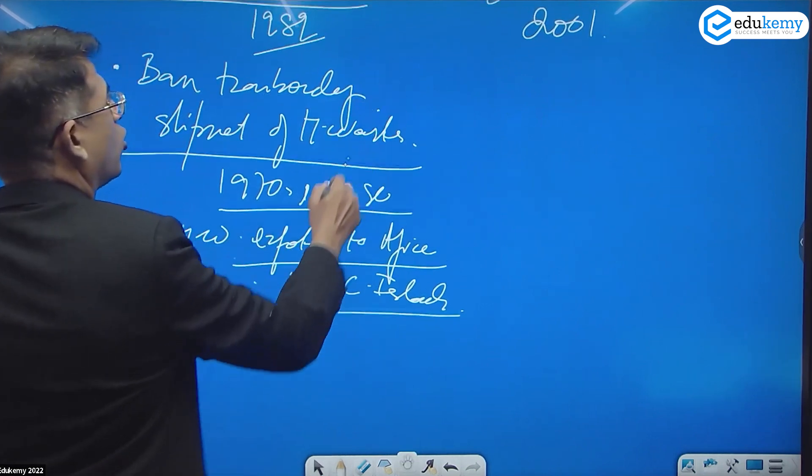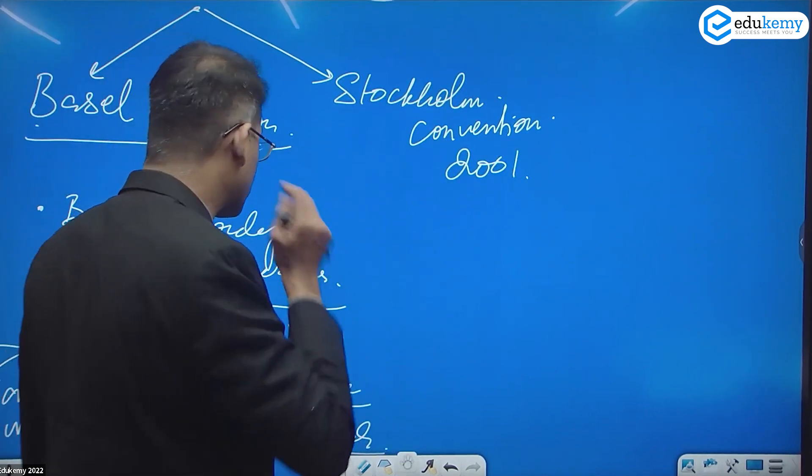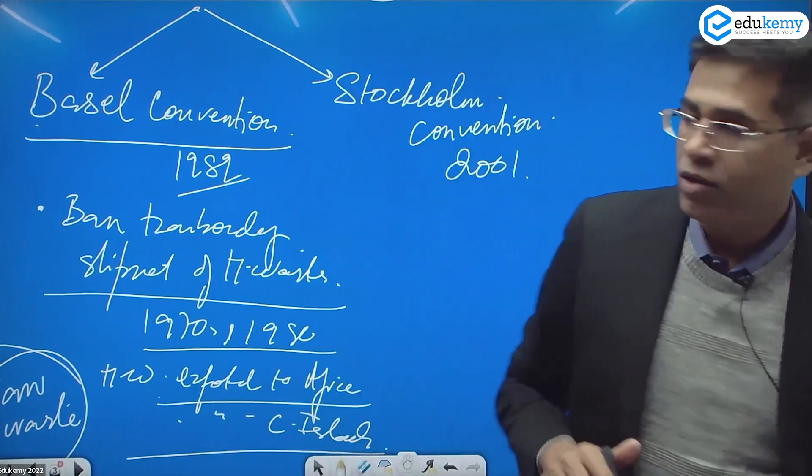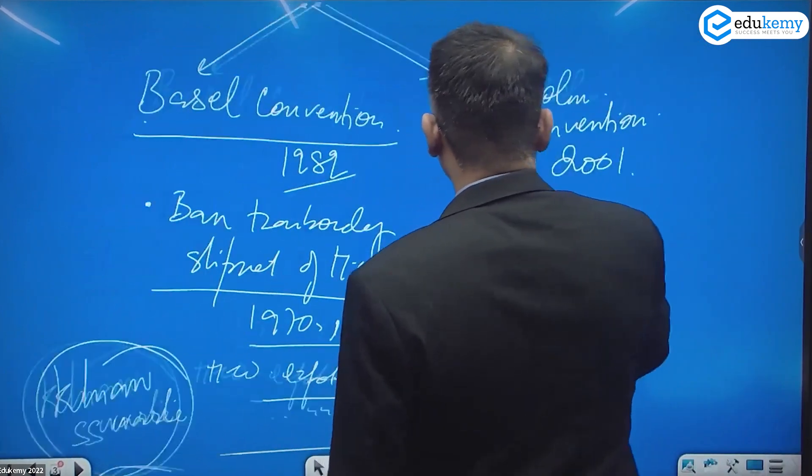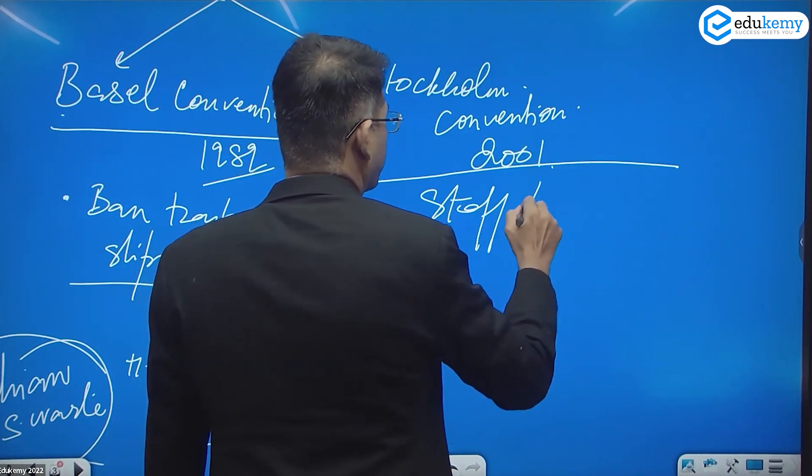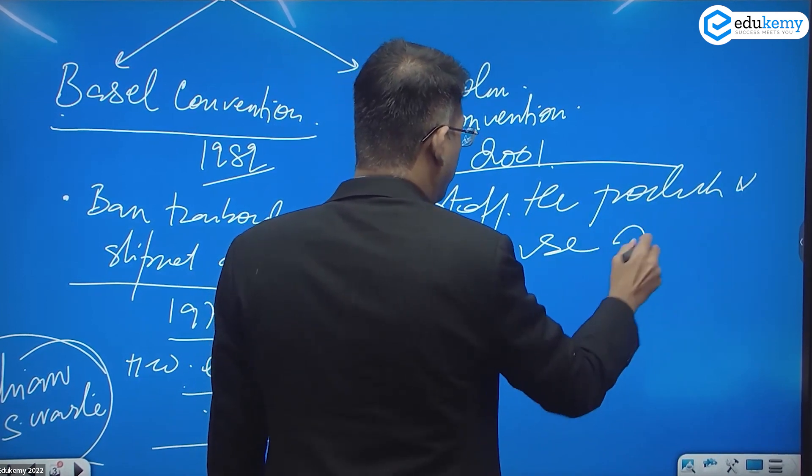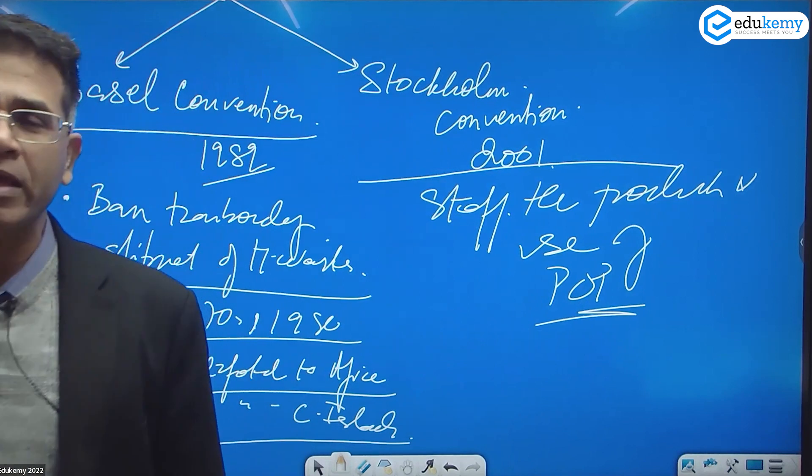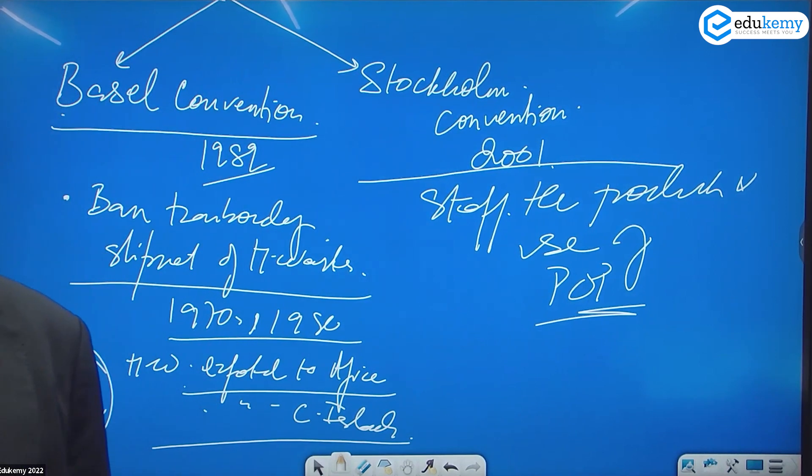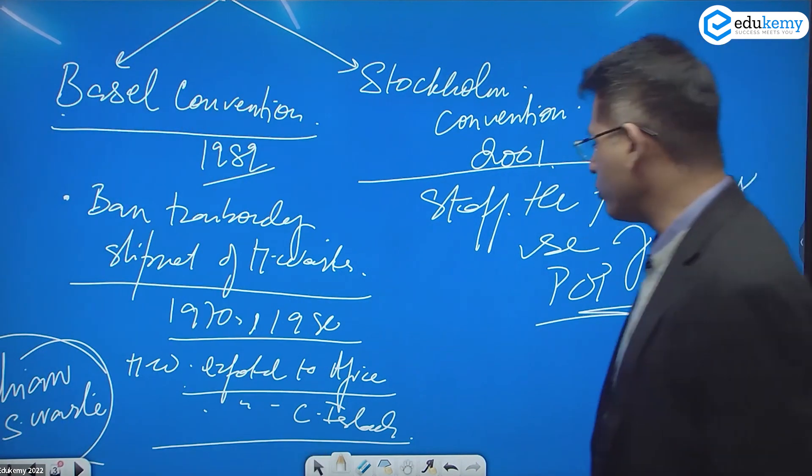Now come back to the other one, the Stockholm Convention 2001. Stockholm Convention is for stopping the production and the use of POPs - for stopping the production and stopping the use of POPs, persistent organic pollutants.